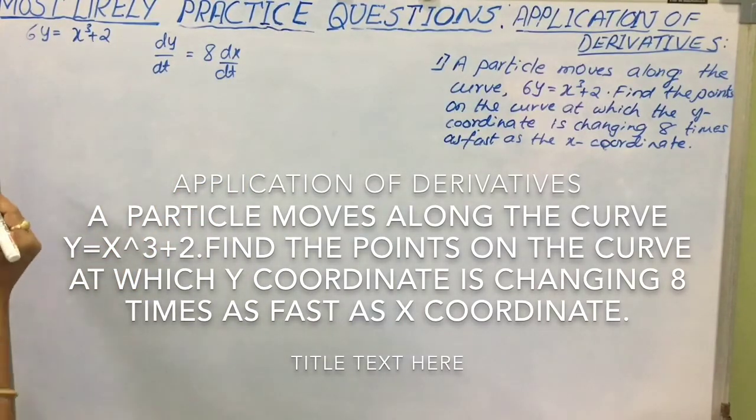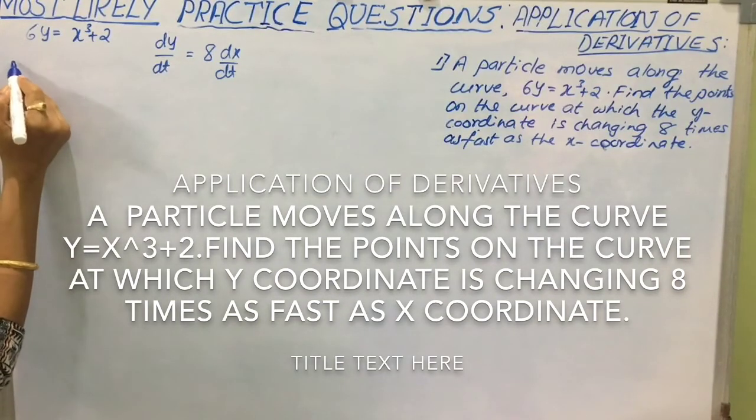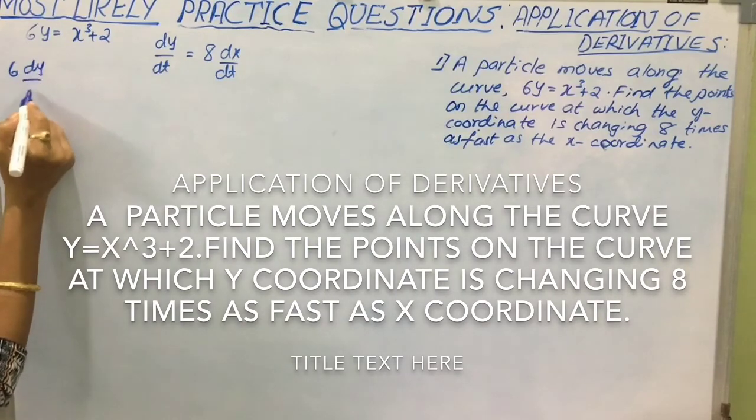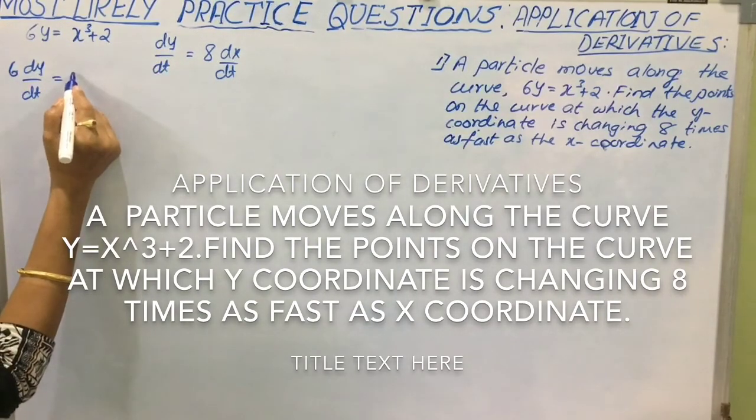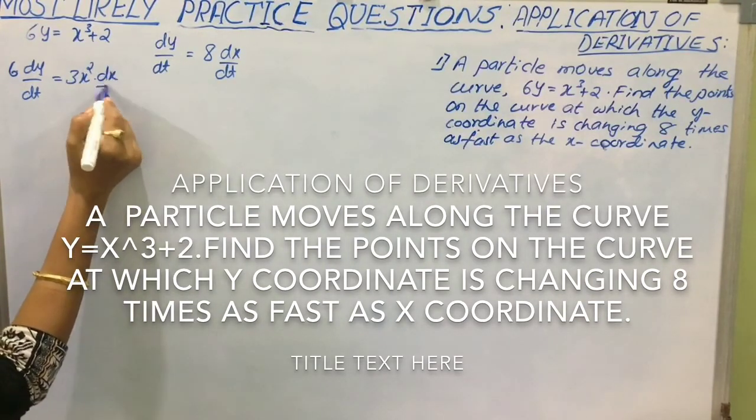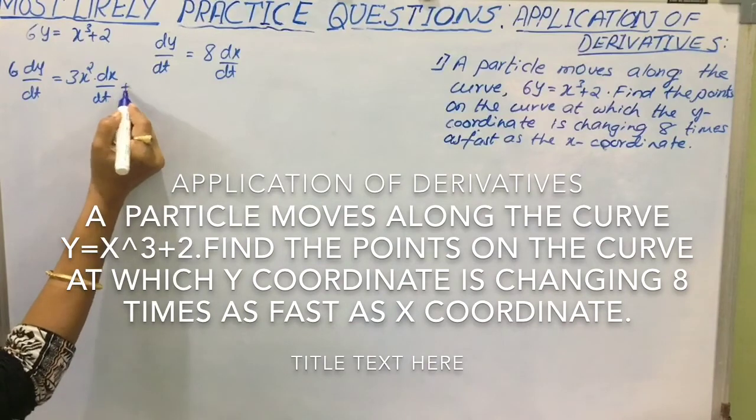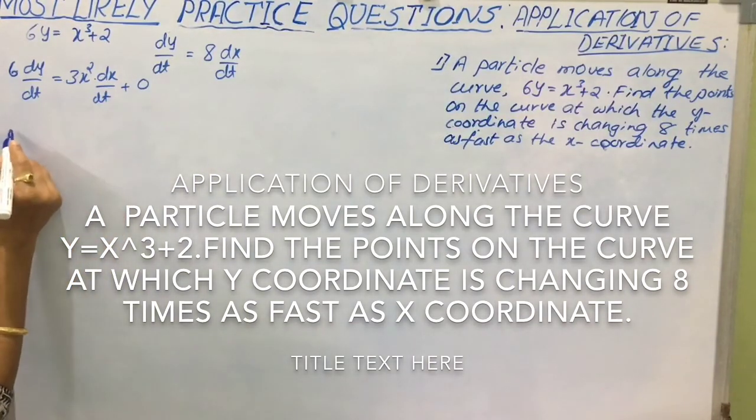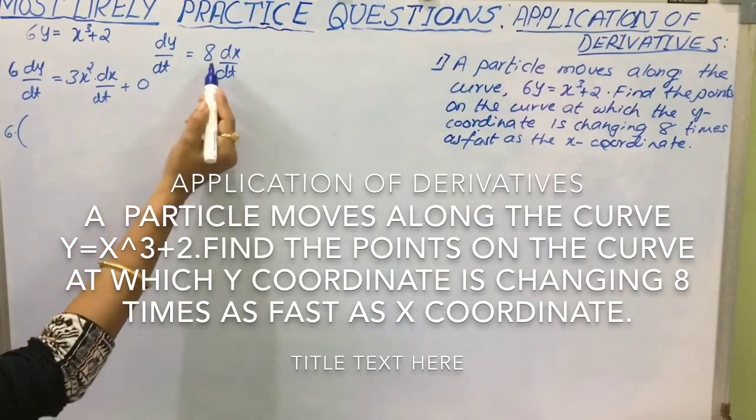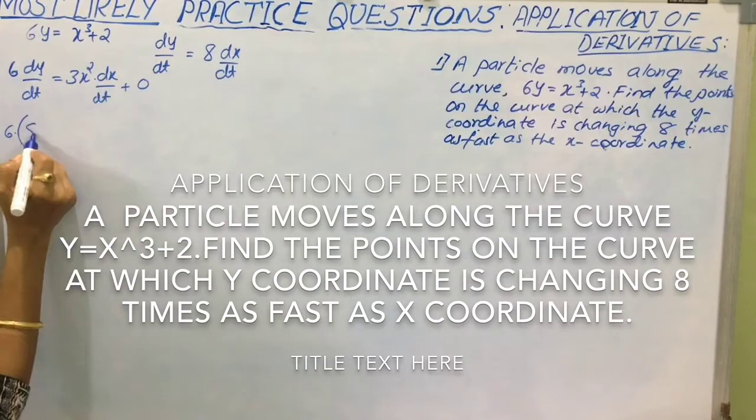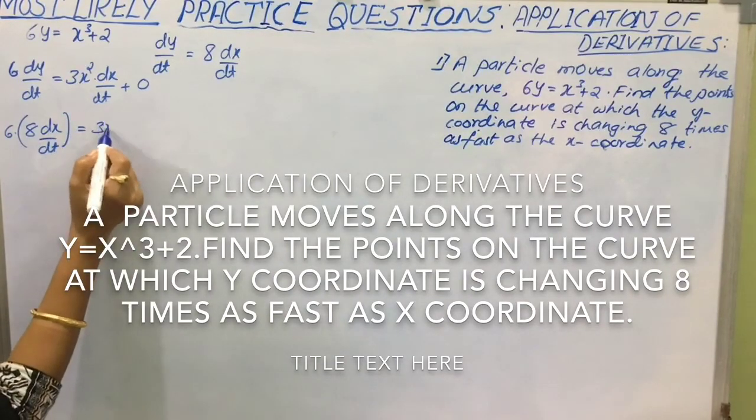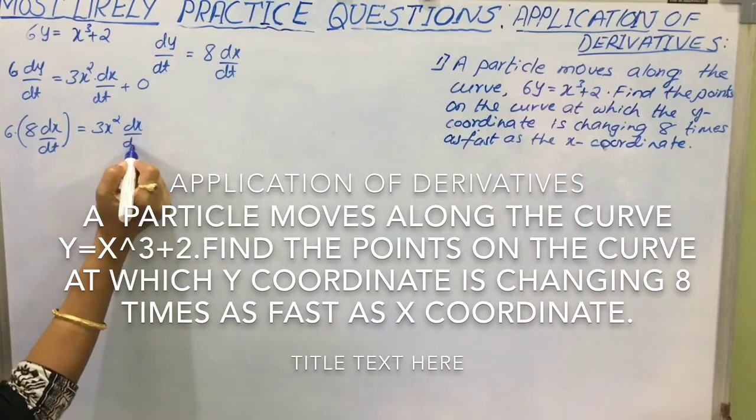Let us differentiate the given curve. 6 times derivative of y with respect to time that is dy by dt equal to derivative of x cube is 3x square times dx by dt plus derivative of 2 is 0. That is 6 times, in place of dy by dt replace 8 times dx by dt, equal to 3x square dx by dt.